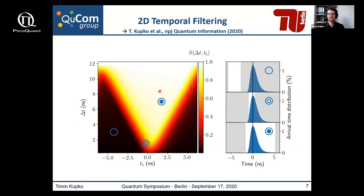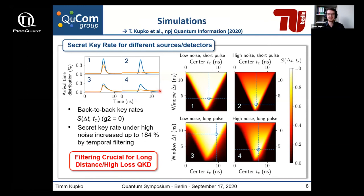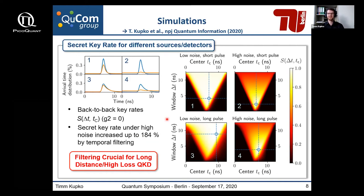The secret key rate back-to-back is calculated from the quantum bit error ratio, the sifted key rate, and our g²(0) value. Since we had only one system at hand, we performed simulations employing different lifetime distributions. If we have very short pulses relative to the repetition rate of the QKD system, or if we are in a regime with very high noise due to very high losses, then this temporal filtering is crucial to achieve the optimal secret key rate. We can achieve in simulations up to 180% performance increase.